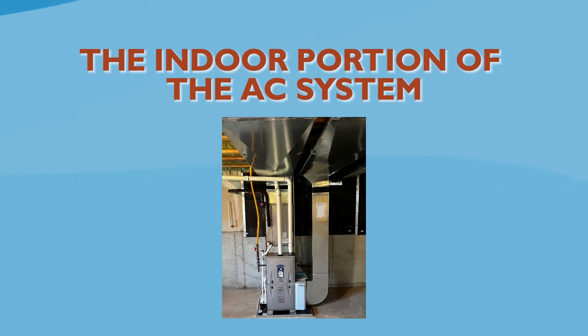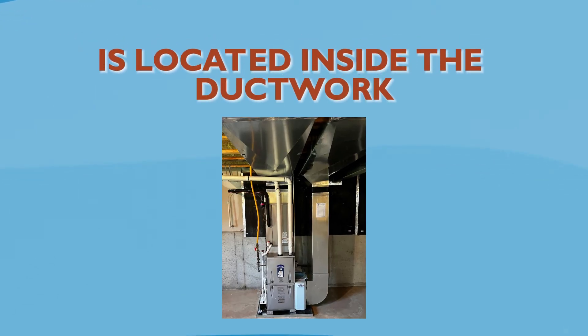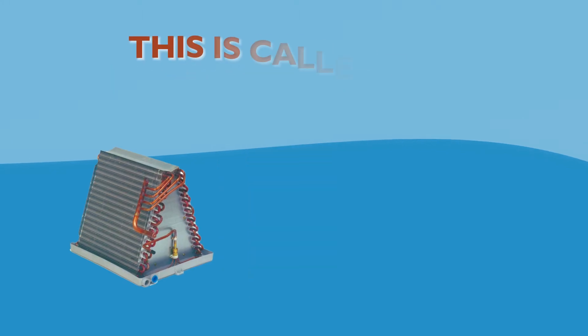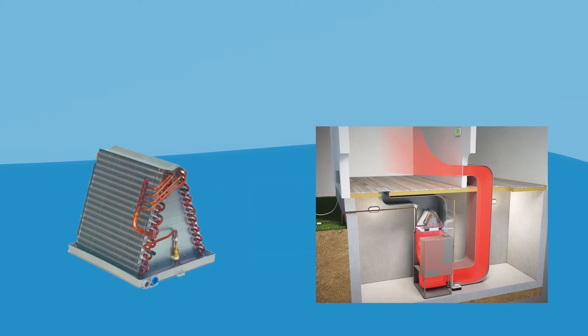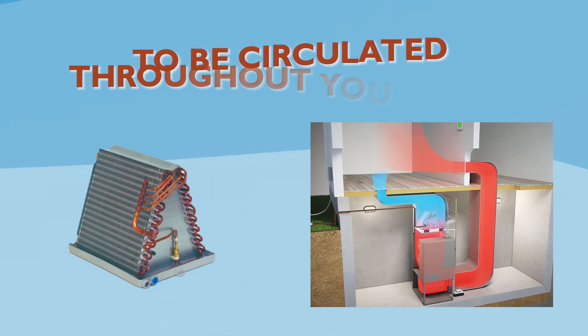The indoor portion of the AC system is located inside the ductwork on top of your furnace. This is called the evaporator coil and is the part that allows cold air to be circulated throughout your home.